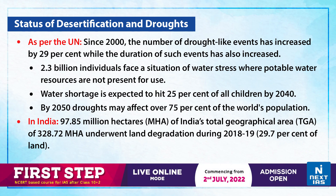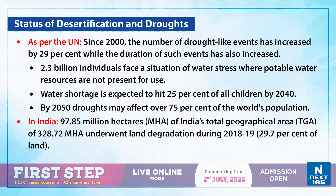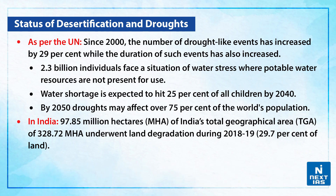The water shortage is expected to hit 25% of all children by the year 2040. And by 2050, droughts may affect over 75% of the world's population.